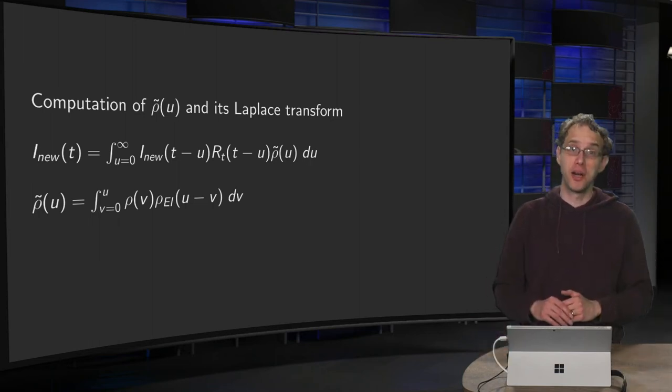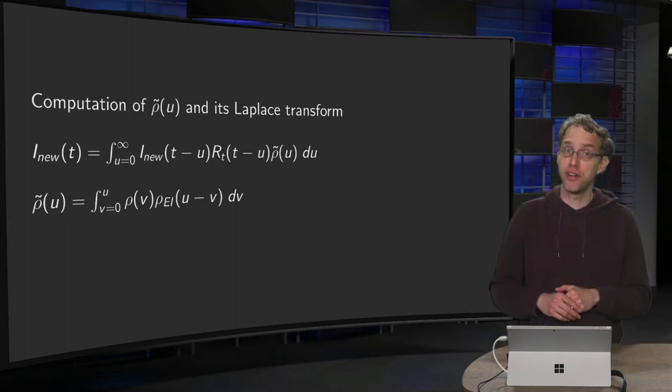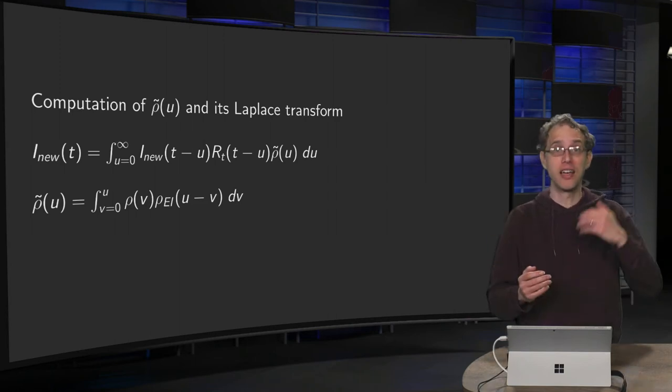We would like to compute our reproduction number RT, and this means that we need the function ρ tilde. ρ tilde is the convolution of ρEi and ρ.